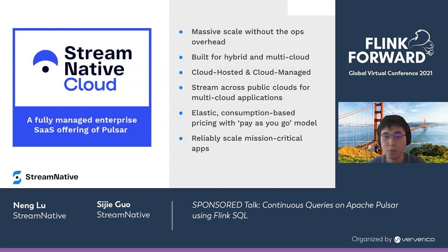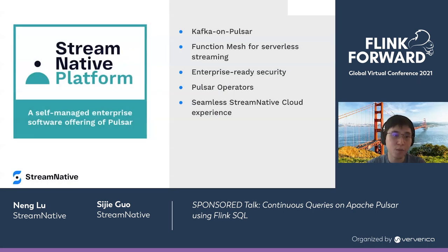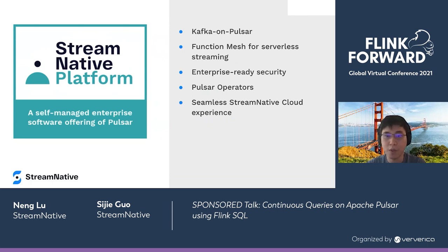Payment is either a pay-as-you-go model, and it can reliably scale mission-critical applications based on traffic and your needs. The second offering is the Stream Native Platform, a self-managed enterprise software offering of Pulsar. Within that offering, there are Kafka and Pulsar features, which allow people to migrate Kafka client-based applications seamlessly to a Pulsar backend without code modification. It has a function mesh service for serverless streaming, enterprise-ready security, and packaged Pulsar operators to help manage daily workloads.